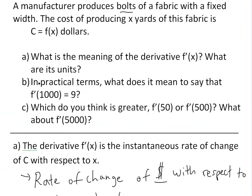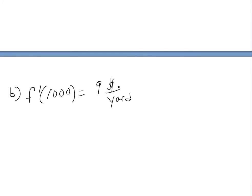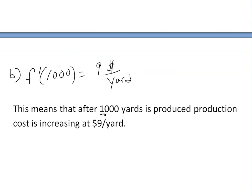Part (b) asks: in practical terms, what does it mean to say that f'(1000) = 9? If f'(1000) equals nine dollars per yard, this means that after producing 1,000 yards of fabric, the production cost is increasing at nine dollars per yard.